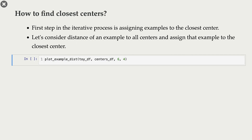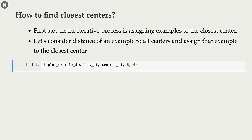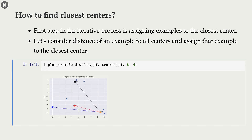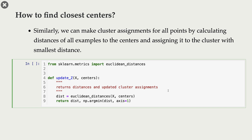How do we do cluster assignment? We find the closest center for each data point. For example, for this orange data point, we calculate distances to all cluster centers and pick the center with minimum distance — that's the cluster assignment for this point. We do this for all examples. I've written a function update_z that calculates Euclidean distances between X and all centers and performs cluster assignment based on the closest center.